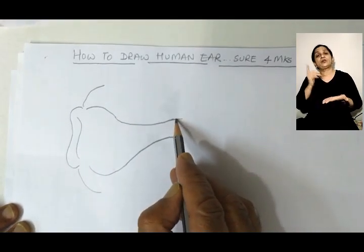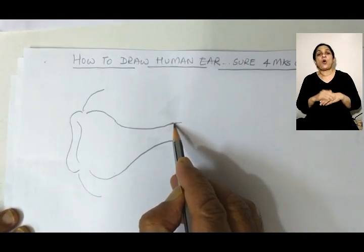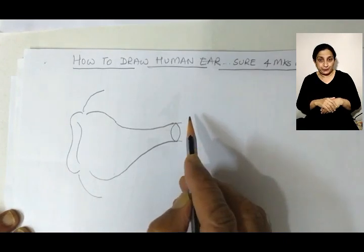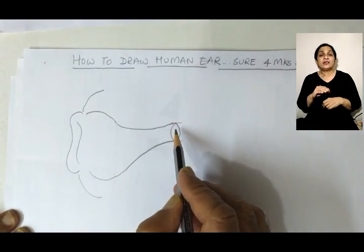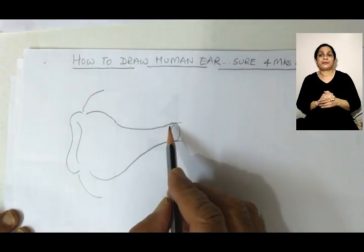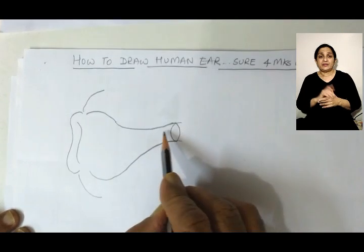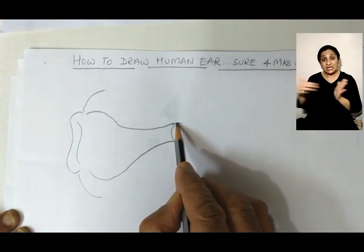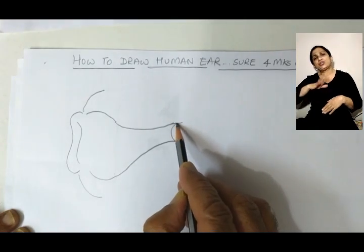Next we will draw the very important part of the ear which is called the tympanum — it can also be called the eardrum, just like a mirror. Sound waves come in, hit the tympanum, and make it vibrate. The next part is the middle ear.